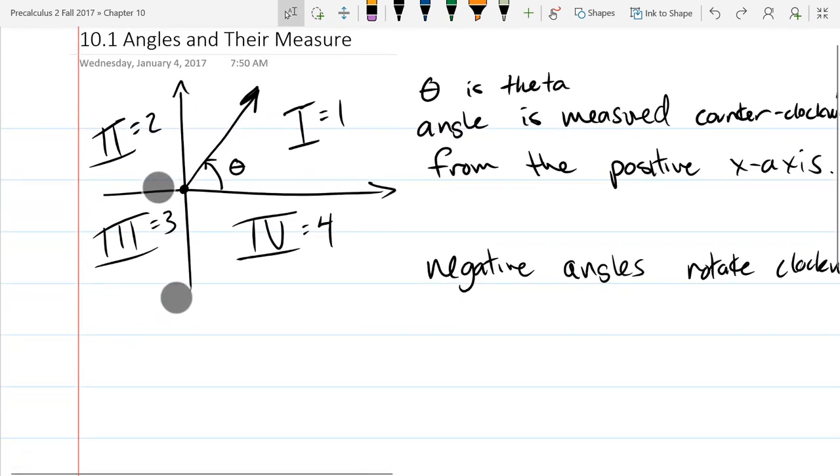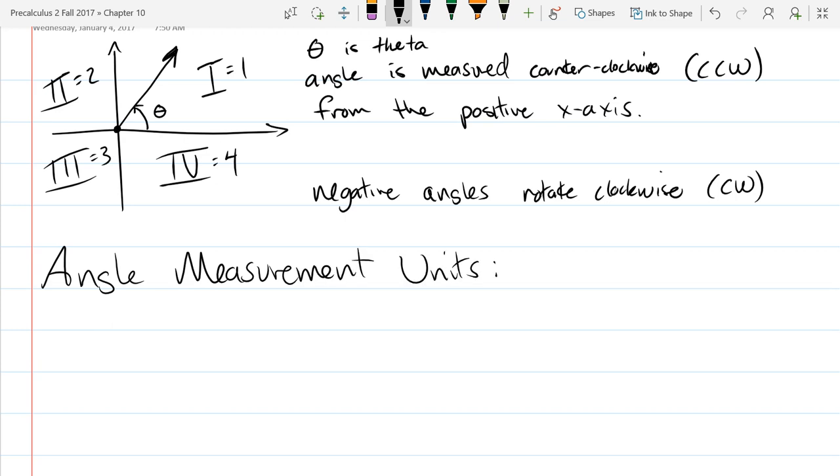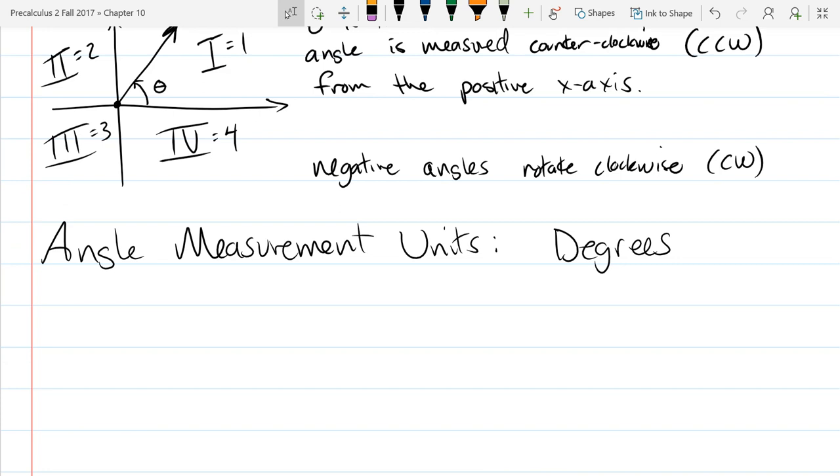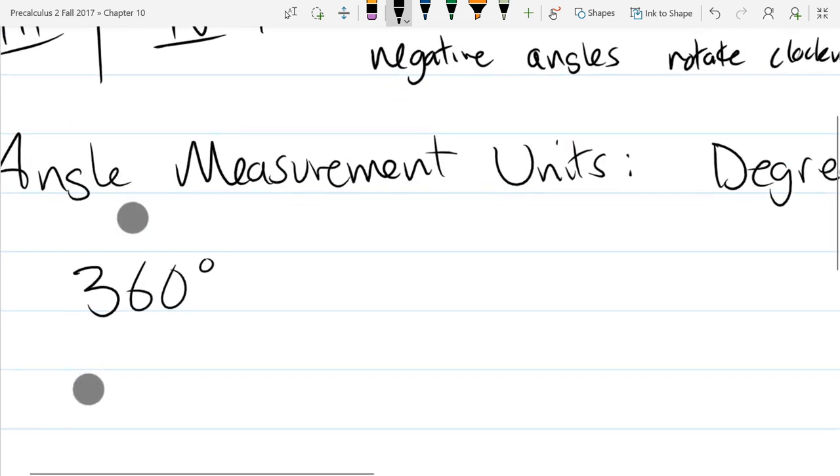The units we're going to start with are degrees. How many degrees in one rotation? 360. So that would be one full rotation. So the degree symbol looks like a zero power. So 360 degrees is one rotation. Now this is positive 360, so this is counterclockwise. So it's not just a rotation, but it's a rotation counterclockwise, the normal way.